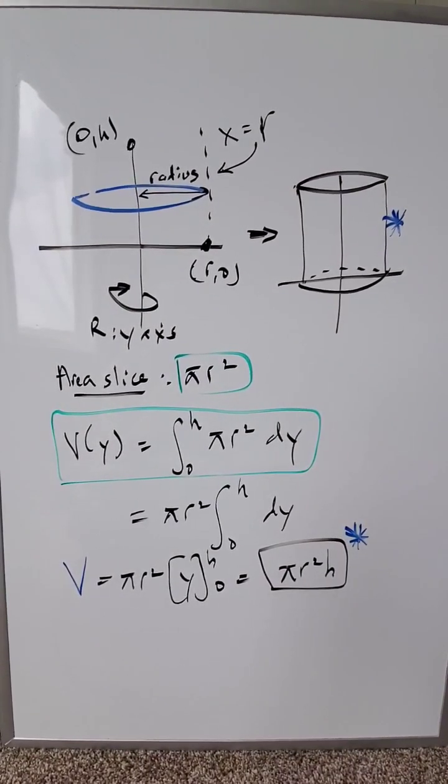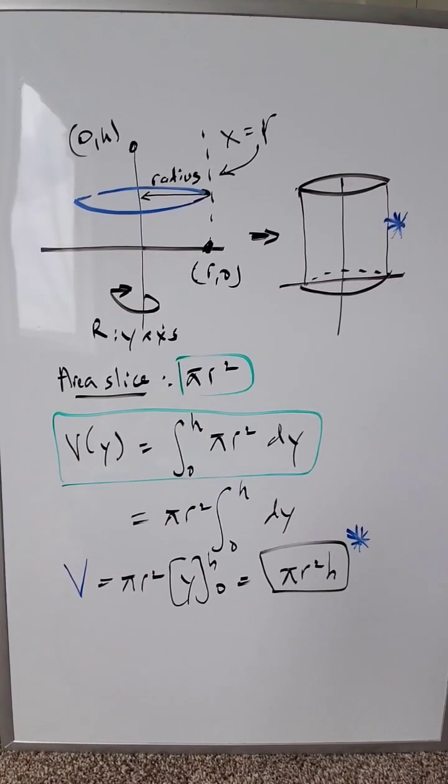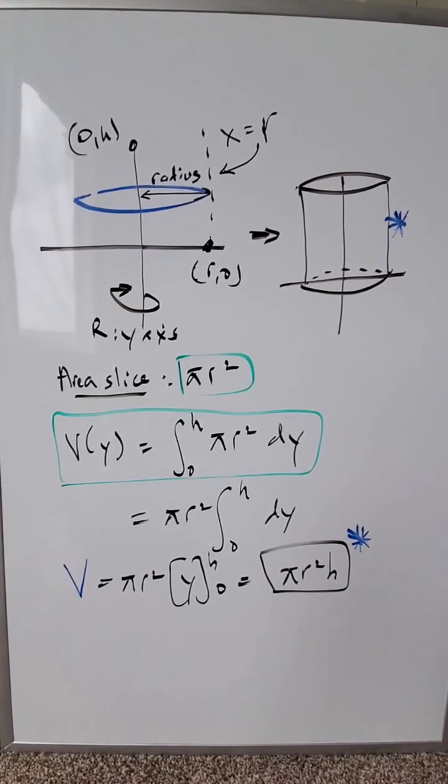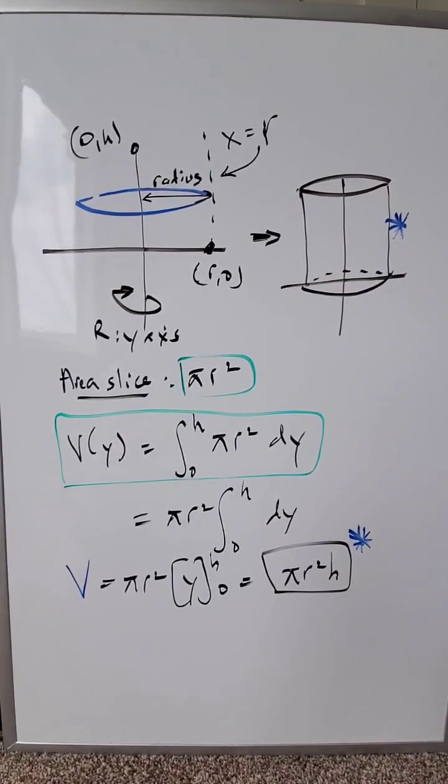You can see in blue there's a cross-sectional slice which has a certain radius. If you were to rotate this depiction around the y-axis, essentially that vertical line around the y-axis, you're looking at that cylinder form towards the right.